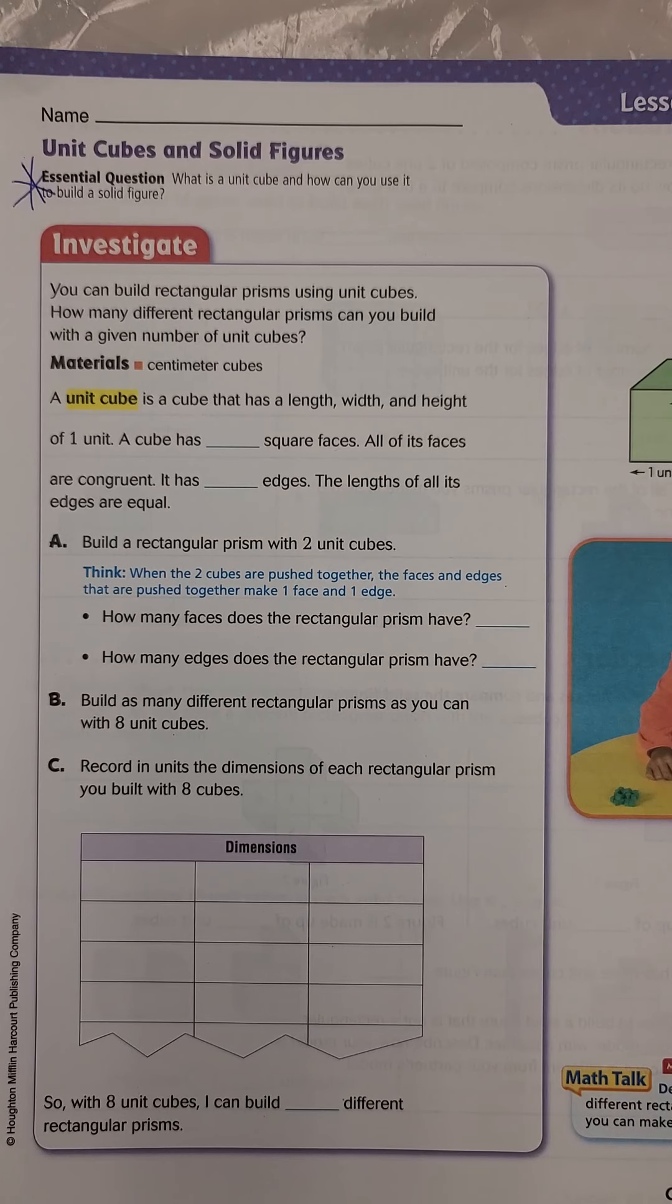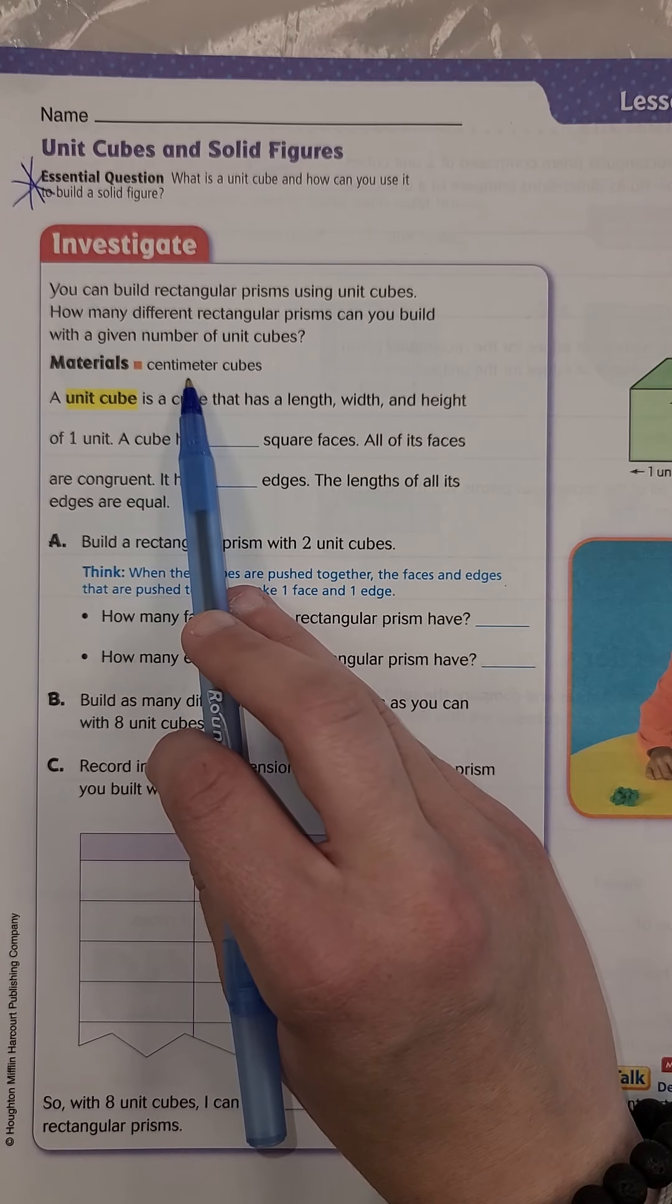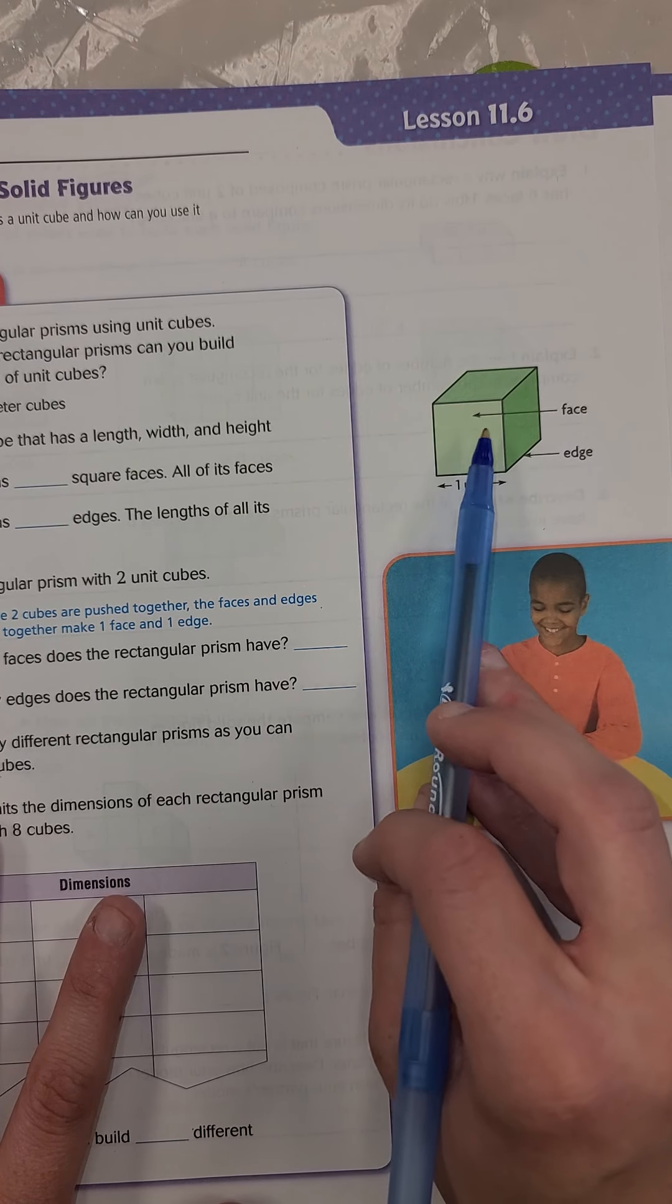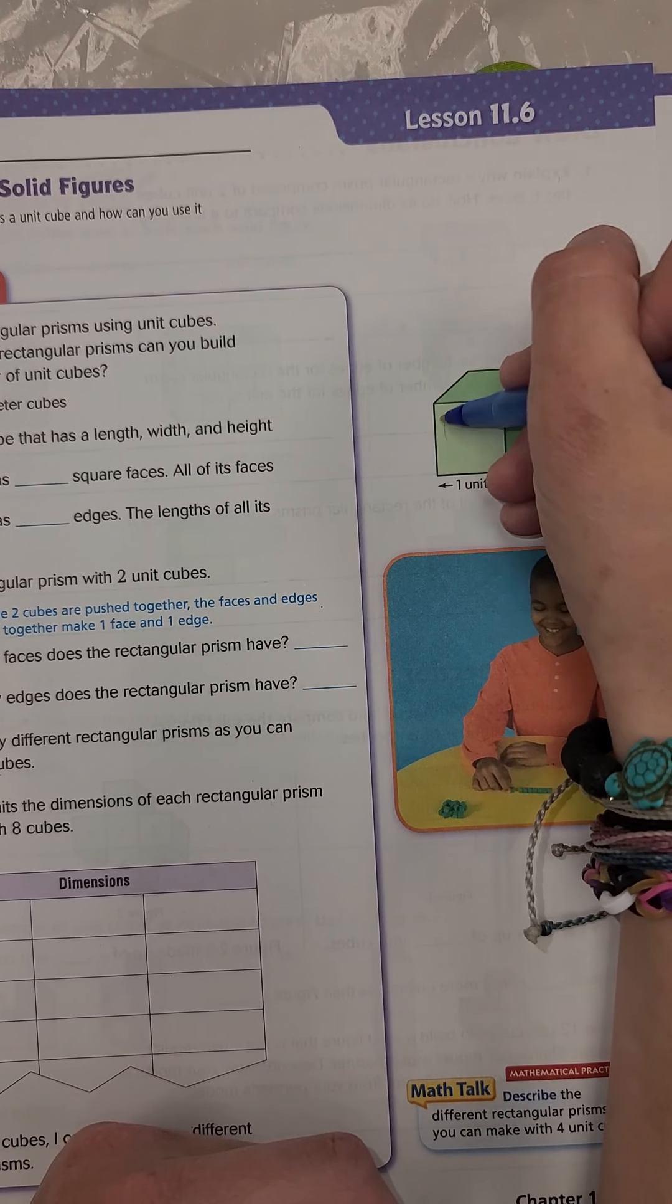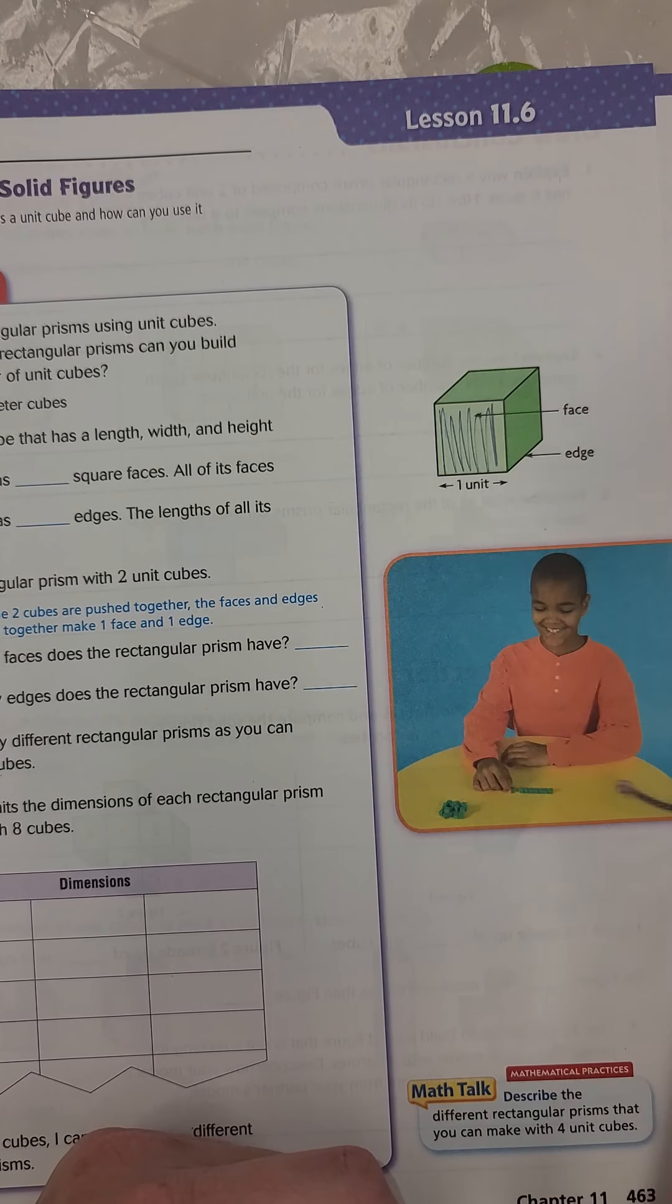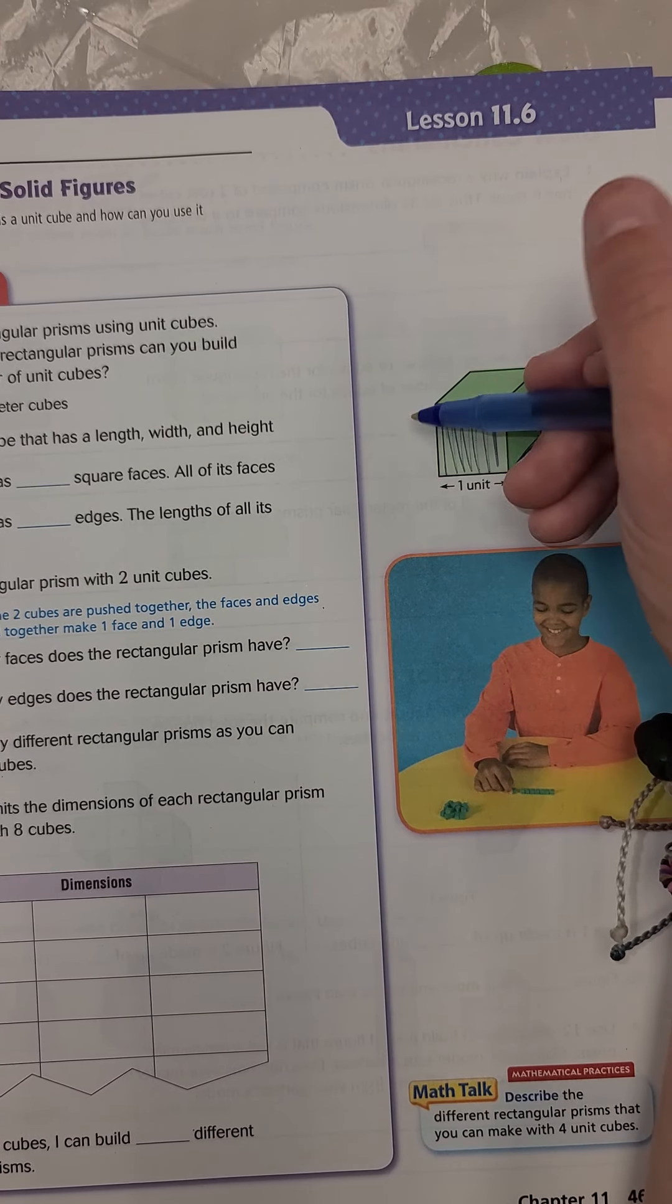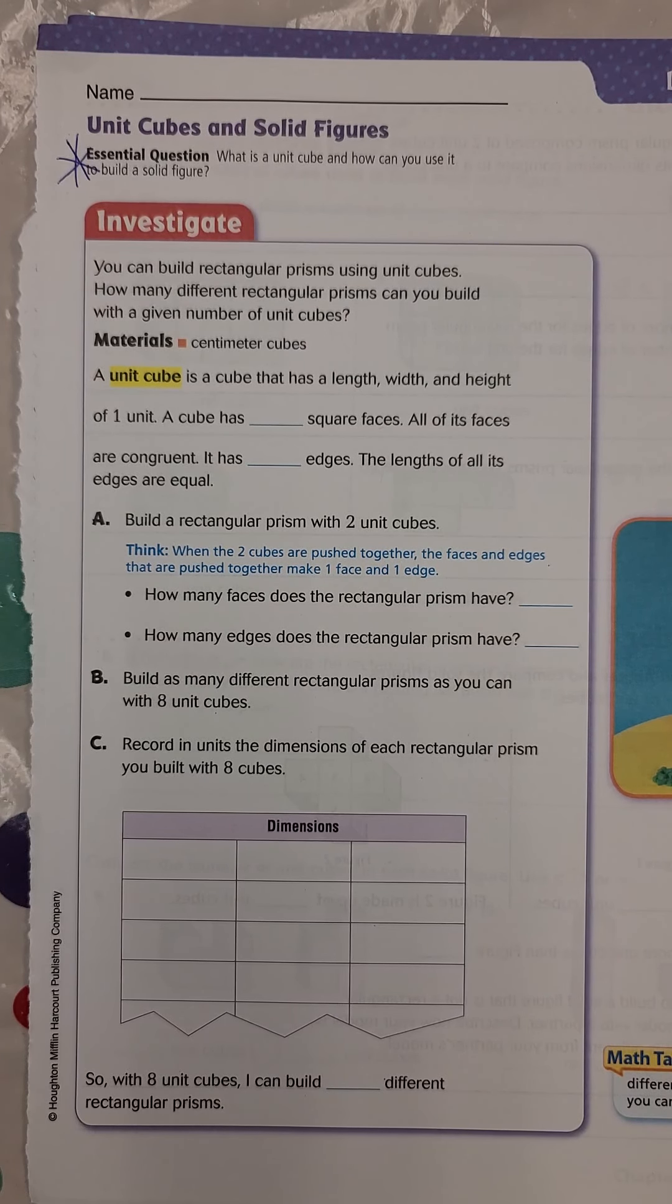It says you can build rectangular prisms using unit cubes. How many different rectangular prisms can you build with the given number of unit cubes? So what they did for this one is they had the centimeter cubes which looks like this. So it's one unit cube wide, one unit cube tall, and one unit cube deep. So length, width, and height are all one unit cube. A unit cube is a cube that has a length, width, and height that is one unit.